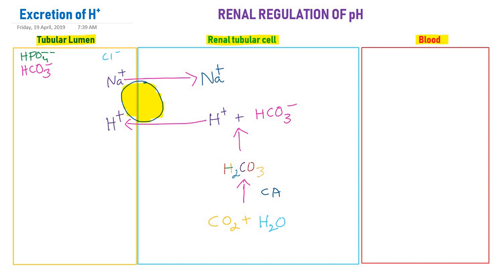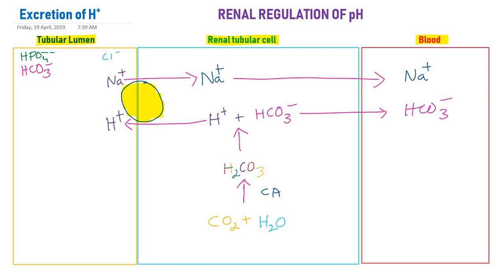This is the first mechanism, where hydrogen ion is secreted into the tubular fluid. The initial ultrafiltrate has a pH almost the same as plasma, but now it will be acidified. The bicarbonate and sodium together diffuse into the blood. So the first mechanism is secretion of hydrogen ion to the tubular fluid by tubular cells.